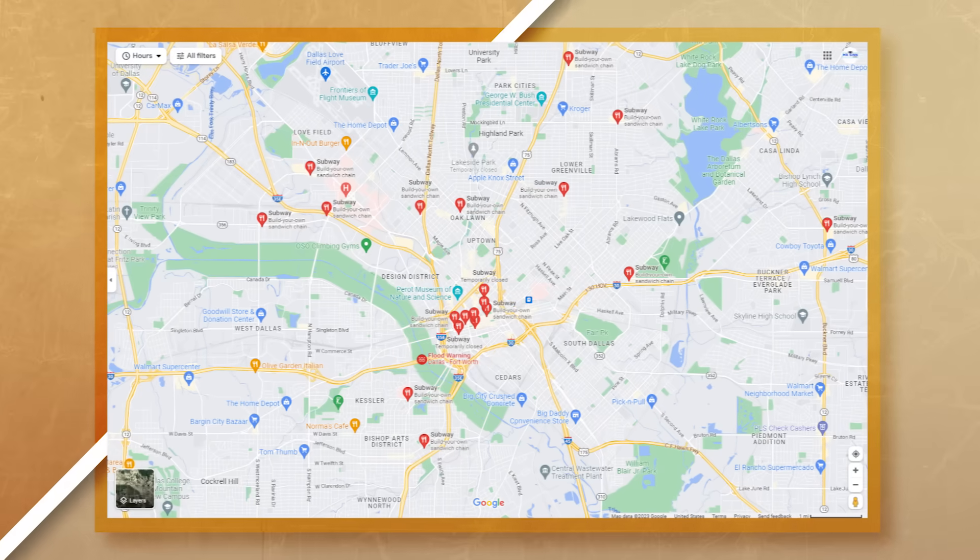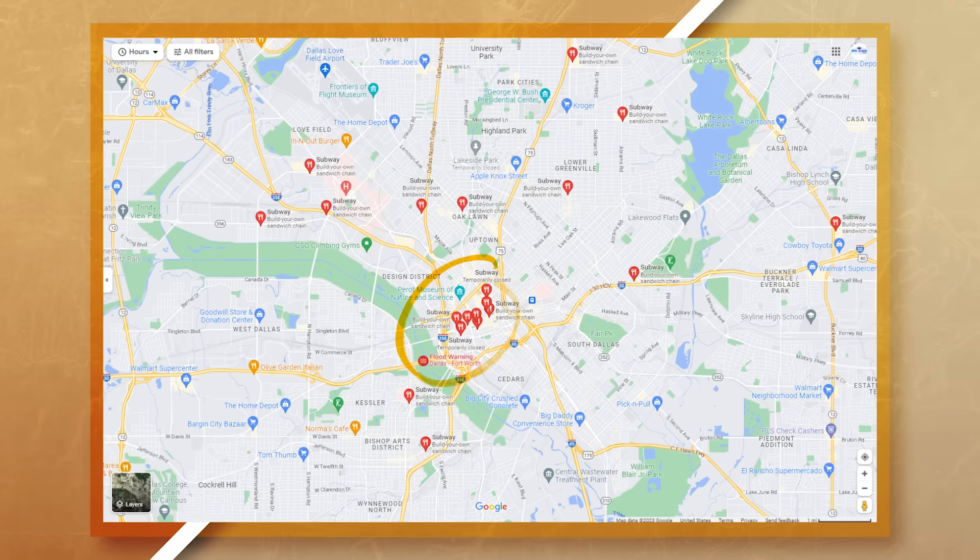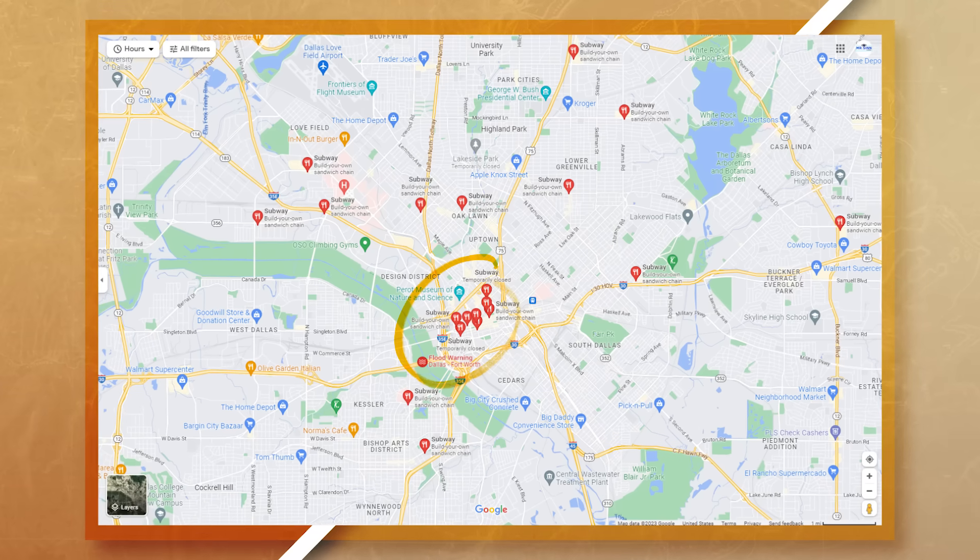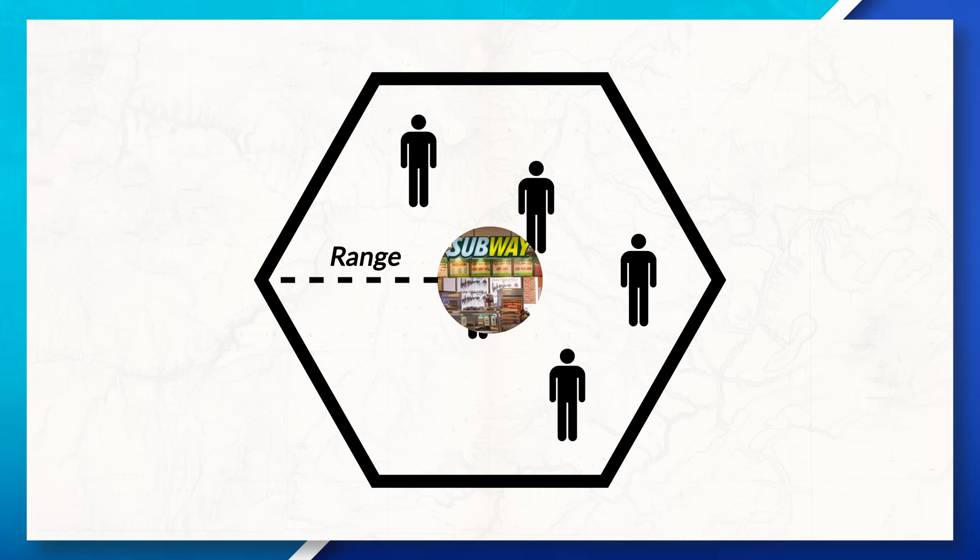To see this concept play out in the real world, we can look at a map showing the different locations of subways in Dallas, Texas. We can see that there are quite a few subways located in the city. In fact, maybe you yourself have actually noticed that there are actually quite a few subways located in your own city as well. This is because subway knows it is a restaurant of convenience and they know that their range is small. Their goal is to make it easy to get to their store.